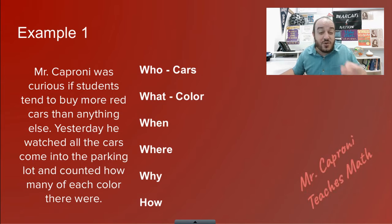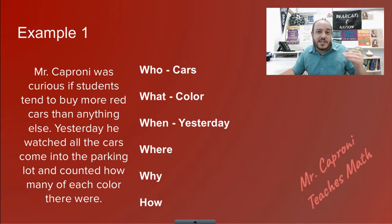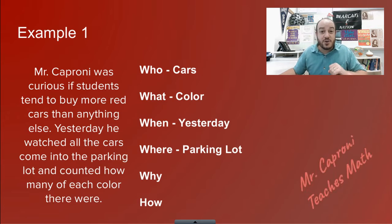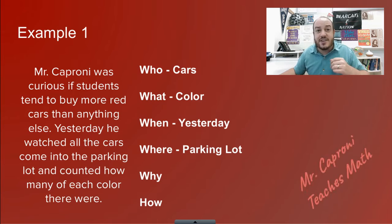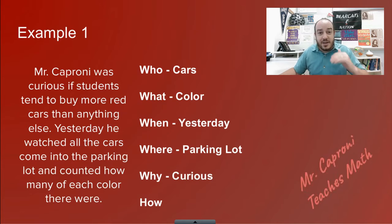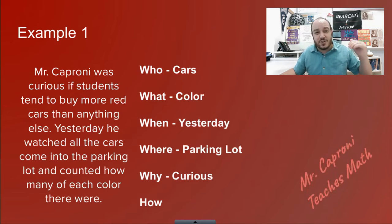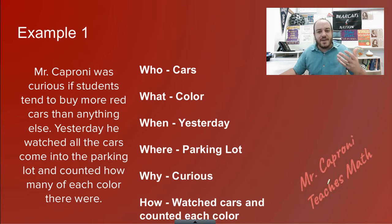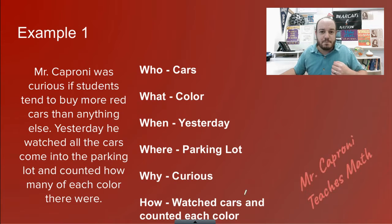Moving on: 'when' — there's no exact time given, just that it happened yesterday. 'Where' — he's out in the parking lot counting the cars. 'Why' — all it says is that he was curious, so that's all we have to go by. 'How' — the example doesn't lay out a full statistical study; it gives a general overview that he watched the cars and counted how many ended up being red.